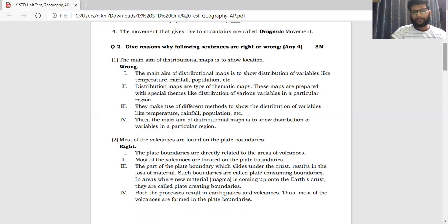Alright, let's come to the next question. Most of the volcanoes are found on the plate boundaries. The answer is right. The plate boundaries are directly related to the areas of volcanoes. Wherever you find the plate boundaries, usually you find the volcanoes and the earthquakes taking place on the same boundary. Most of the volcanoes are located on the plate boundaries. Both the processes result in earthquakes and volcanoes. Most of the volcanoes are formed in the plate boundaries.